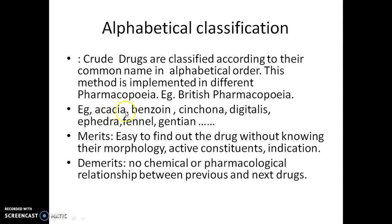For example, acacia starting with A comes before benzoin, then cinchona, then digitalis, ephedra, and gentian. The advantage of this classification system is that it is very easy to find a drug without knowing its morphology, activity, active constituent, or therapeutic indication — only knowing the name is sufficient. It is just like searching for a word in a dictionary.